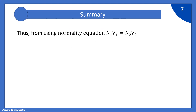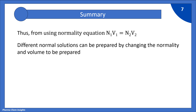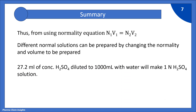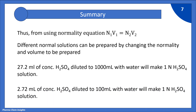Using the normality equation N1V1 = N2V2, different normal solutions can be prepared by changing the normality and volume to be prepared — you can adjust both as per your requirement. From the above calculations: 27.2 ml of concentrated H₂SO₄ diluted to 1000 ml gives 1 normal H₂SO₄. Similarly, 2.72 ml of concentrated H₂SO₄ diluted to 100 ml with water will also make 1 normal H₂SO₄ solution.